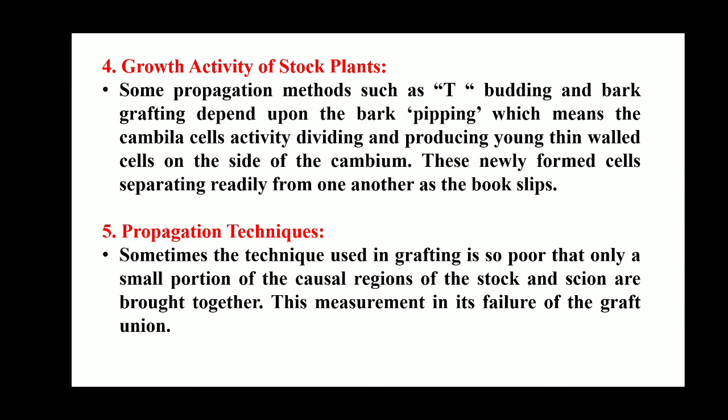Temperature, relative humidity, and oxygen content near the cut surface are very essential and we have to take care of these so that we can get maximum success in grafting. Growth activity of the stock plants: some propagation methods such as T-budding and bark grafting depend upon the bark slipping, which means the cambium cells are actively dividing and producing young thin-walled cells on the side of the cambium. These newly formed cells separate readily from one another as the bark slips.